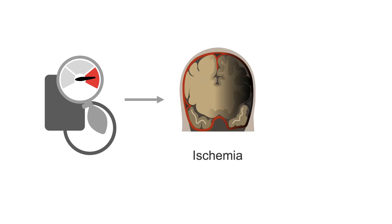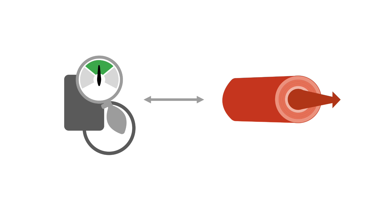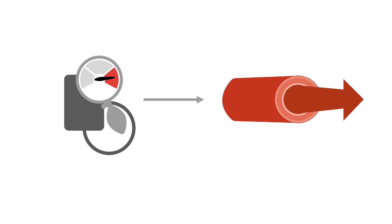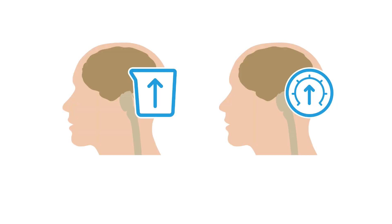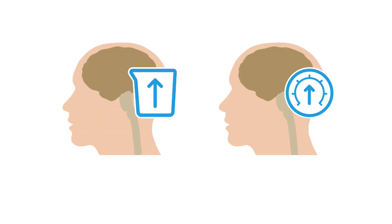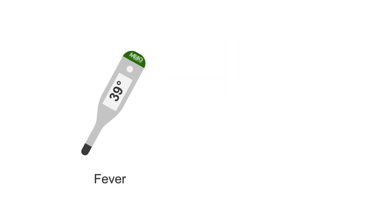Blood pressure elevation may be indicative of ischemia or hemorrhage and stroke. Cerebral blood flow is proportionally linked to blood pressure. When the blood pressure fluctuates, the intracranial blood volume is altered, which can alter pressure and result in a headache.